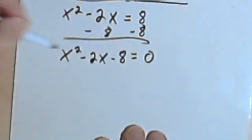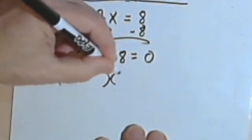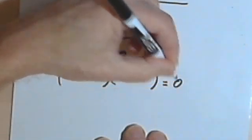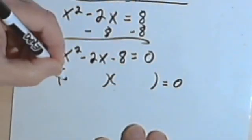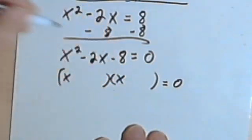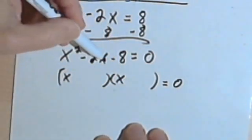And now I've got x squared minus 2x minus 8 equals 0. So this is just a straightforward quadratic equation. I'll factor it. Since I've got an x squared, I know both of my binomials will begin with an x.